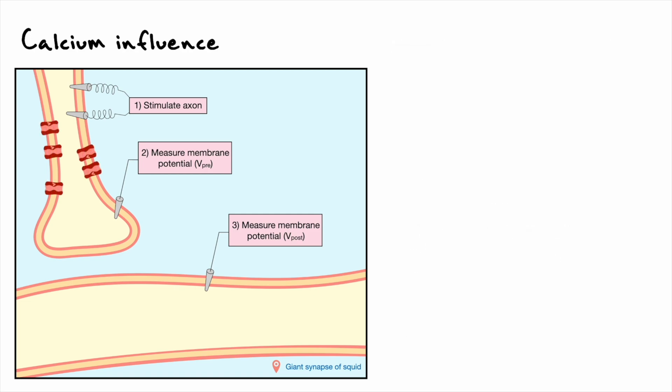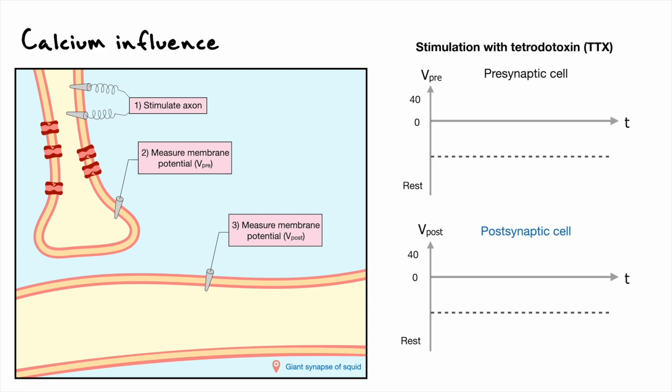The same experiment can be performed in the presence of tetrodotoxin or TTX. Remember that TTX is a toxin that blocks voltage-gated sodium channels and thus impacts the action potential of the pre-synaptic cell. In this setup, what the experimenters have noticed is that in successive action potentials, the amplitude of both the pre-synaptic action potential and the post-synaptic excitatory post-synaptic potential gradually decrease as the effects of TTX get stronger.